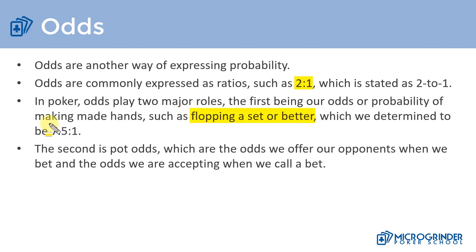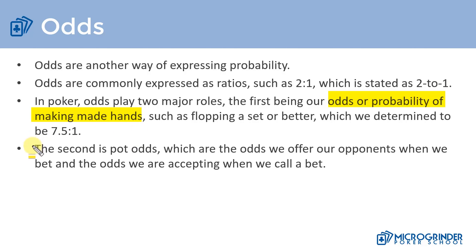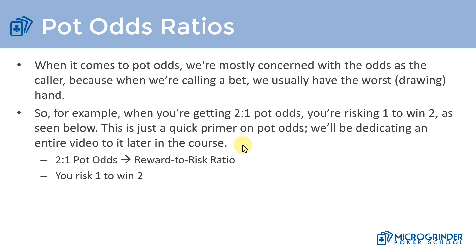For a specific poker example, the odds of flopping a set or better are seven and a half to one. In poker, odds can be used in two ways: first, the odds of making a hand; and second, pot odds — the odds you're offering opponents to call, or the odds you're accepting when calling someone else's bet. We'll talk about these further as we progress through the course, so don't worry if this isn't fully clear yet.